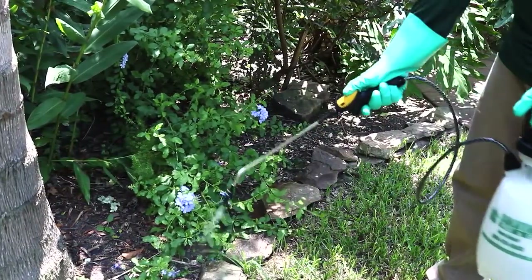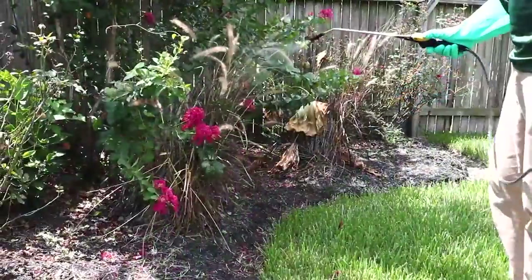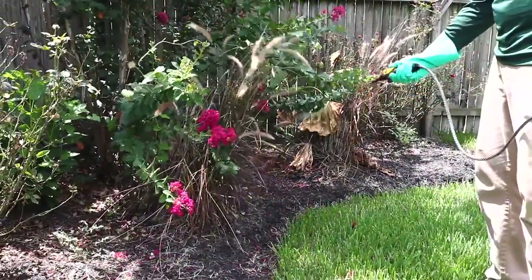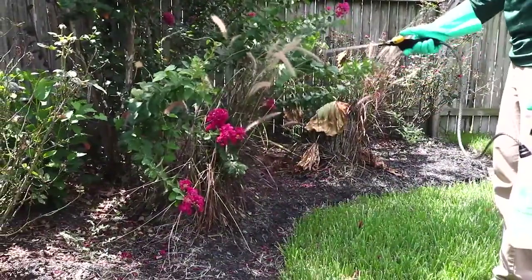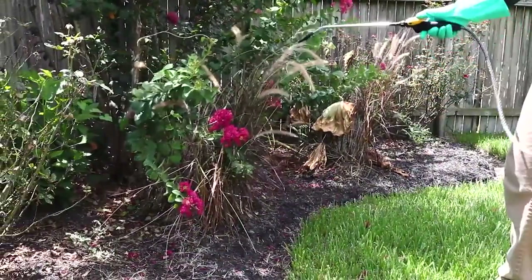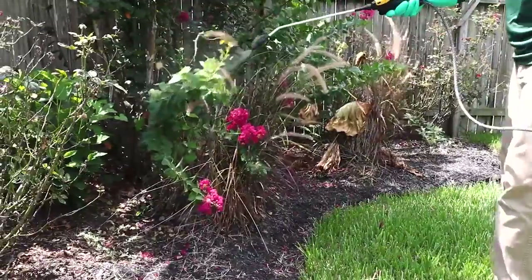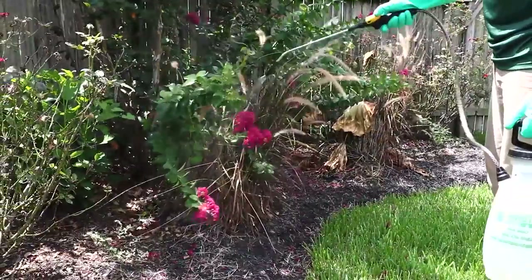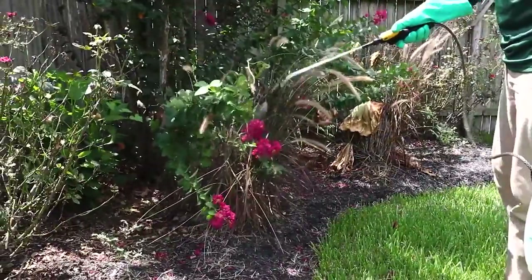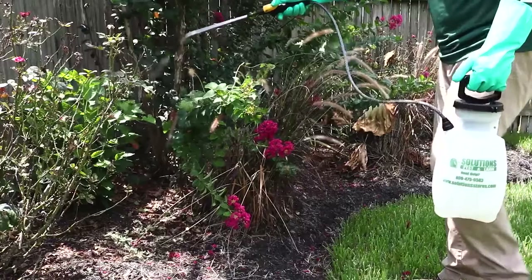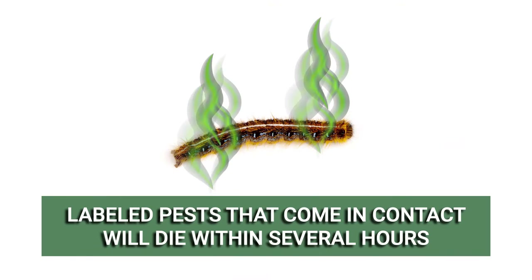If applying Supreme IT, do not apply the solution to any plants grown for consumption. Wait until treated plants are completely dry before any irrigation can occur and before allowing children, people, or pets to come into contact. Labeled pests that come in contact with the spray or the residual will have their nervous systems impacted and will eventually die within several hours.